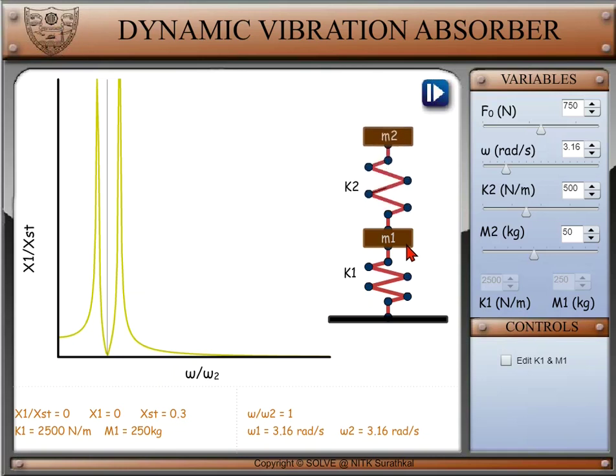In this explore phase we have animation section, variable section and control section. In animation section we have a two degree system of mass and spring, and a graph plot of magnification factor of first body versus the frequency ratio.